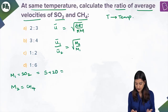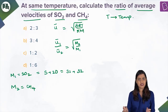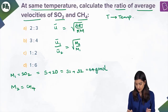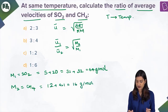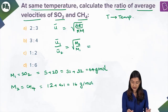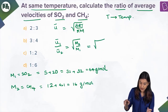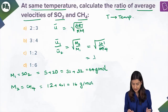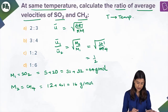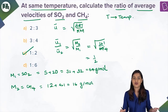Let gas 1 be SO₂ and gas 2 be CH₄. Molar mass of SO₂: sulfur (32) + 2×oxygen (2×16 = 32) = 64 g/mol. Molar mass of CH₄: carbon (12) + 4×hydrogen (4×1 = 4) = 16 g/mol. So u(SO₂)/u(CH₄) = √(M_CH₄/M_SO₂) = √(16/64) = √(1/4) = 1/2. The ratio is 1:2, which is option C.